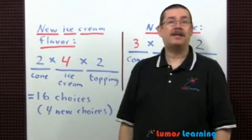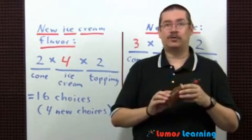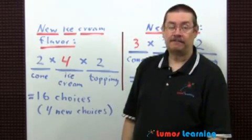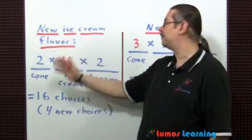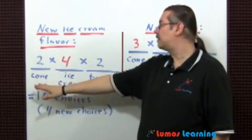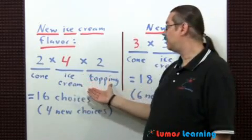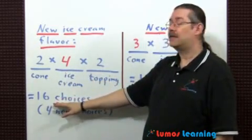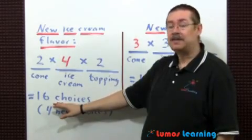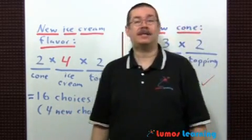Before I continue, let me remind you that when the shop owner ran out of caramel, the total number of choices went down to only 12. So let's see what happens when he decides to add a new ice cream flavor. The slots would be as follows: two for cone, four for ice cream, and two toppings. Multiply the numbers together, you get a total of 16 choices, which means there are four new choices available.